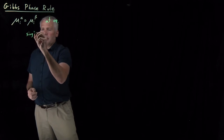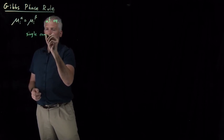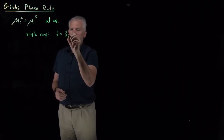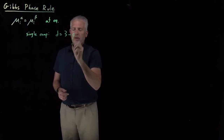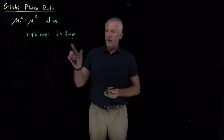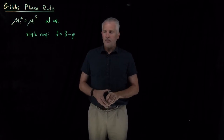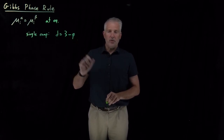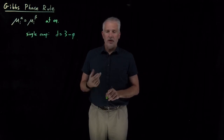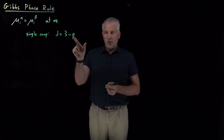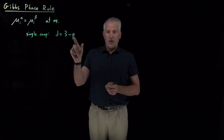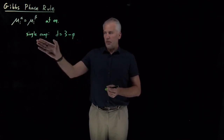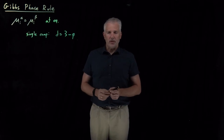For a single component system, we've already discussed that we can only specify degrees of freedom equal to 3 minus the number of phases. So for a single phase system, we can specify temperature and pressure — 3 minus 1 is 2 degrees of freedom. If we have phase coexistence between two different phases, then we can only specify the temperature or the pressure, but not both at the same time.